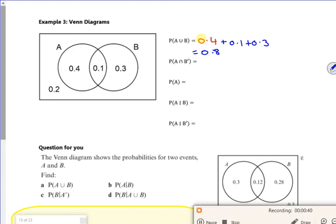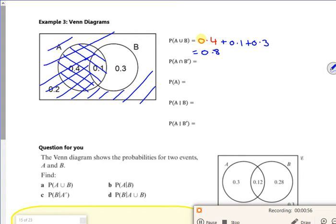So A and not B. If I did the shading on this, A is that one, not B is everything else on the outside. If it was OR, I'd look where anything was shaded, but because it's AND, I look at the overlap. So the overlap is just the 0.4 there.